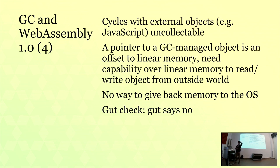When you give an object to JavaScript, you give it as an integer — specifically an index into linear memory. So if JavaScript wants to refer to that object, it has to have a capability over all linear memory; you have no abstraction at that point. And you can't give the memory back to the operating system if you manage to compact memory. In the eternal dialectic between 'worse is better' and building the right thing, I think most people in this room are more on the right side.